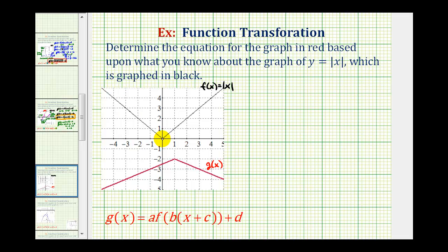So we'll let f of x be equal to the basic absolute value function. We'll let g of x be our transformed function. And because g of x is a transformation of f of x, we can write g of x in the form given here below, where a, b, c, and d transform the graph of f of x.